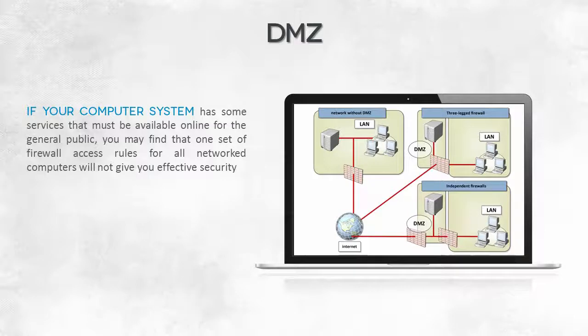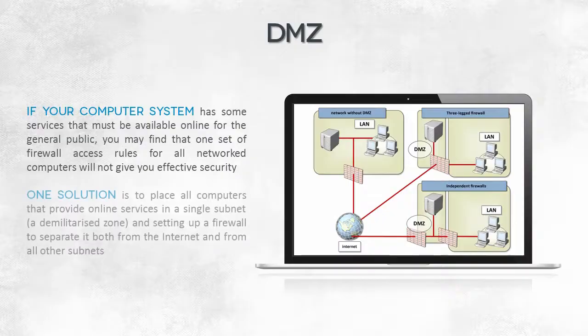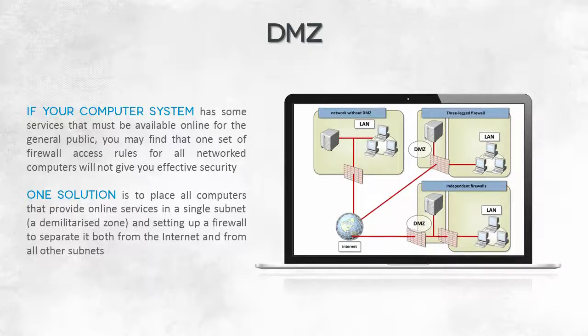There's a principle that states that a firewall cannot be configured in such a way that it protects both local users and external servers. Rules established to ensure the security of workstations will block servers, while rules that allow servers to work will not protect workstations effectively. It appears that more than one set of rules is needed, and thus, more than one firewall.